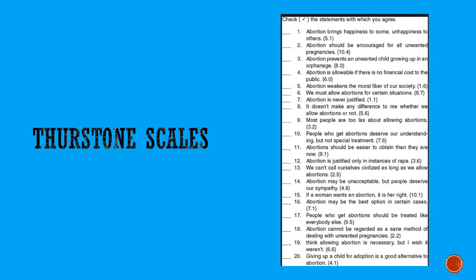You present the subjects with a list of statements like: 'Abortion brings happiness to some, unhappiness to others' — that statement has a score of 5.1. 'Abortion should be encouraged for all unwanted pregnancies' — that's a 10.4. So if you check that you agree with that one, you're checking a pretty high-value item. People go down the list just checking the items they agree with. If they're checking mostly items that are very positive about the issue, you'll end up with a lot of high scores. Basically, you add up the numbers on the questions the person agreed with, and the higher the score, the more positive the attitude.